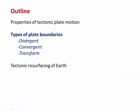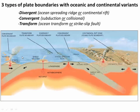So now let's take a formal look at the types of plate boundaries. These are going to be divergent, convergent, and transform. We can divide those into oceanic and continental variations. For example, a divergent plate boundary, where plates are moving apart, could either be a mid-ocean spreading ridge or a continental rift. Likewise, a convergent boundary could either be a subduction zone, where one plate is diving beneath another, or it could be a collisional zone, where two continental plates are colliding together.